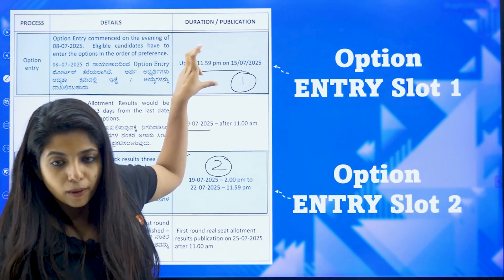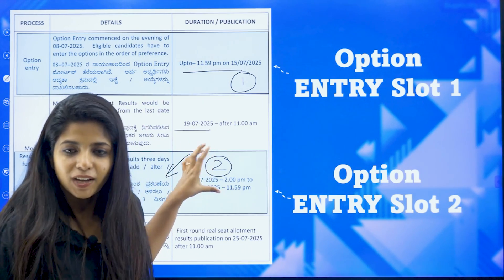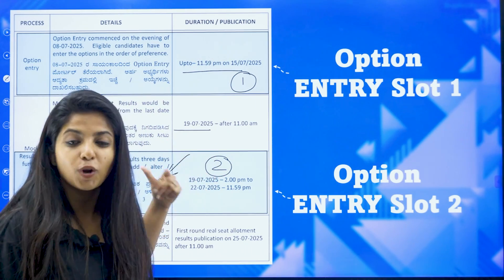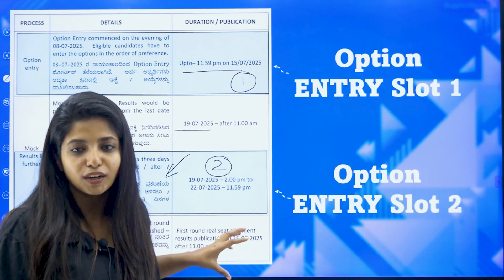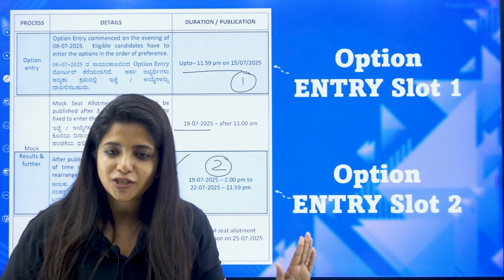So mock allotment option entry, then the result. Here itself, you have round one option entry and then the result. So which is why there are two dates. I hope now that sorted.